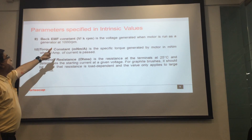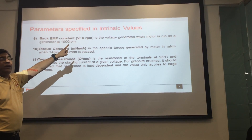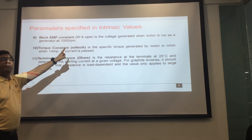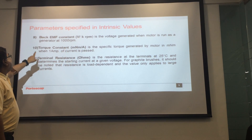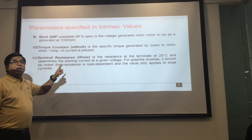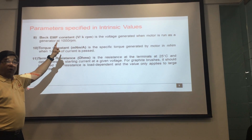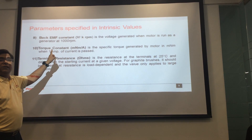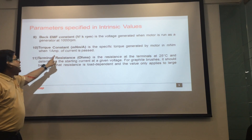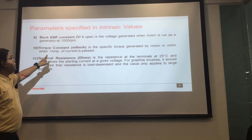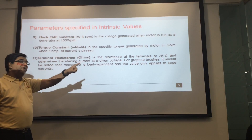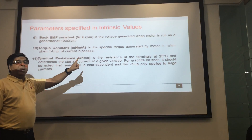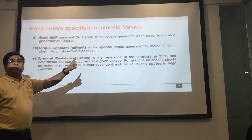Now we come to the next slide of intrinsic values. Intrinsic values are important parameters of the motor. The first is the back EMF constant — it is the voltage generated in the motor when it operates as a generator, per 1000 RPM. The next is the torque constant — it is the specific torque generated by the motor when one ampere of current is passed.